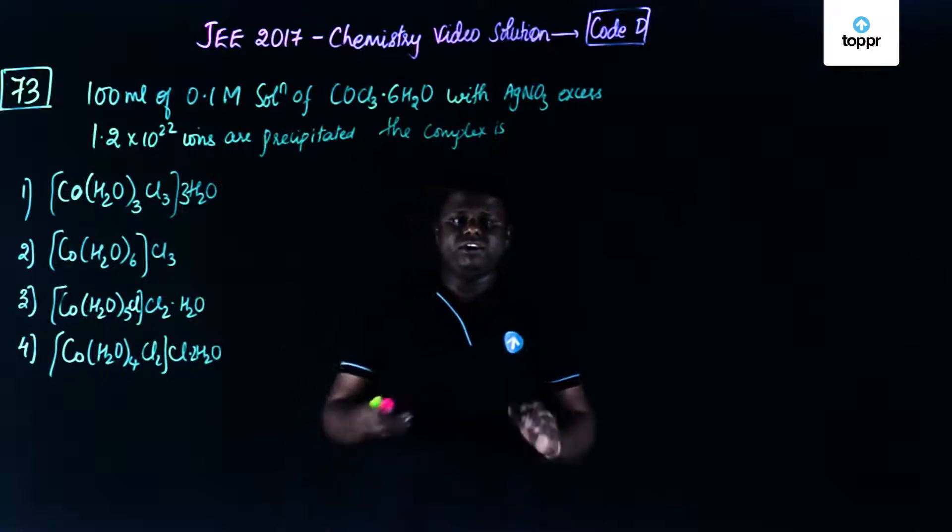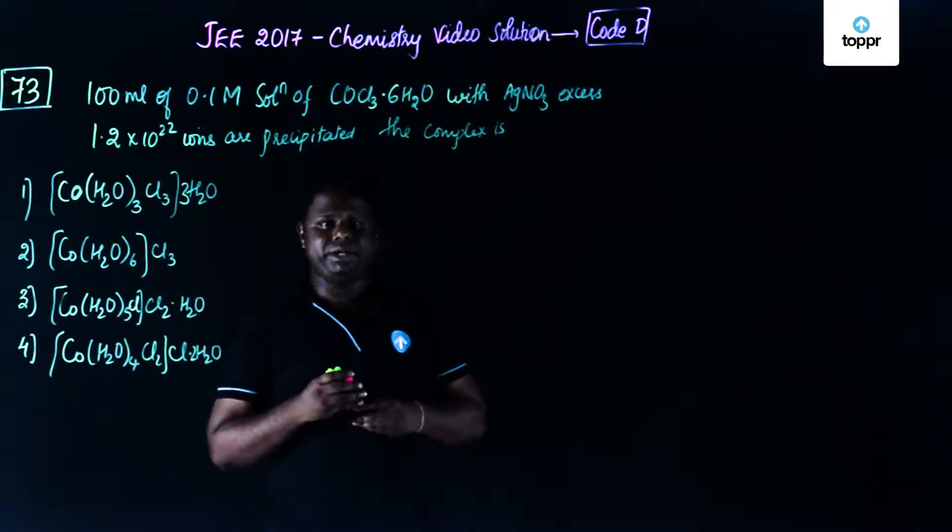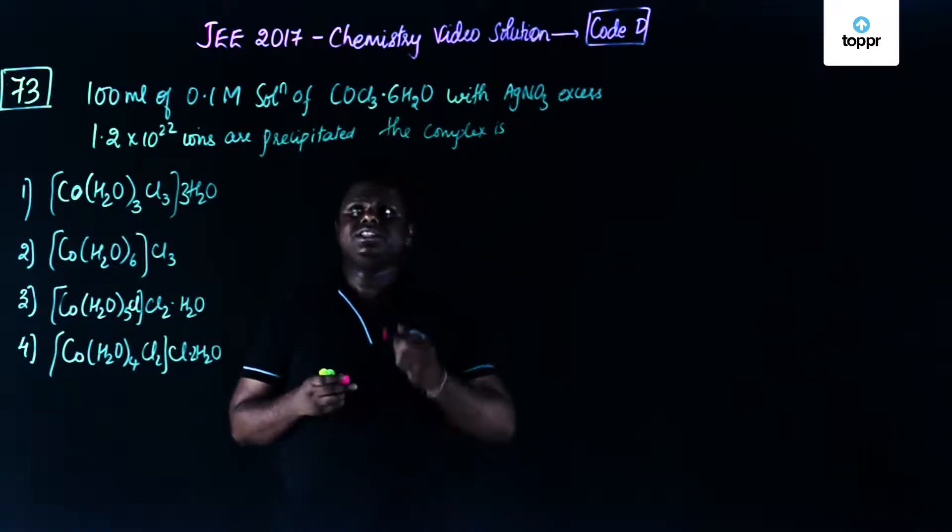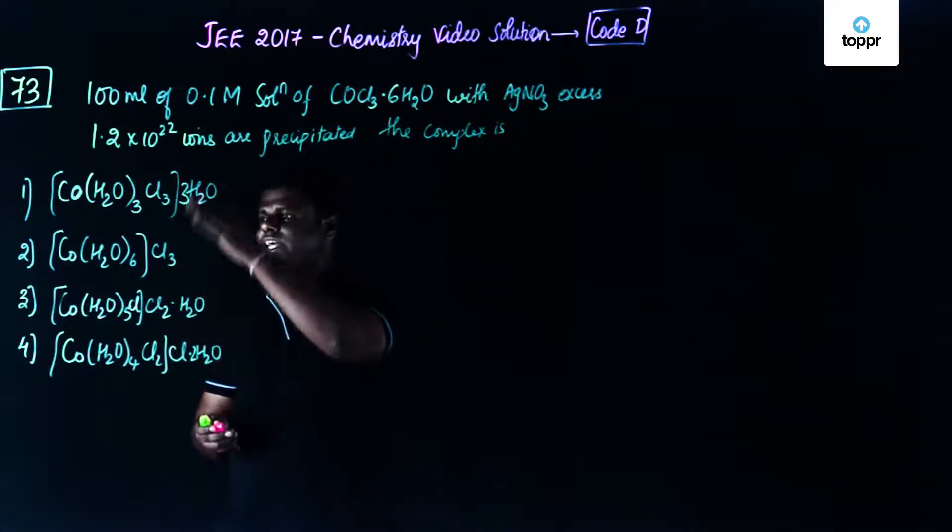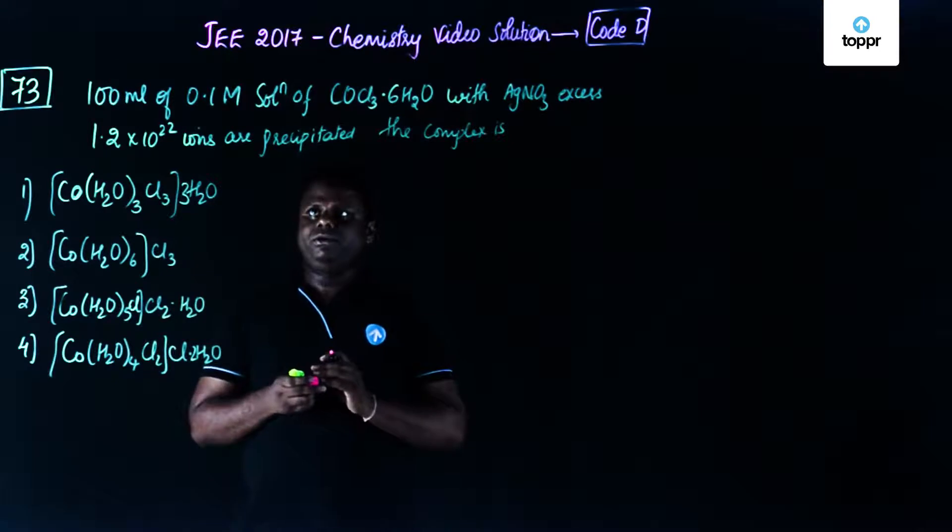The possibility is Cl, right? Because we already know that AgCl is a precipitate, white precipitate. So if we know the number of Cl which are present, we'll be able to understand what could be the compound.